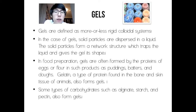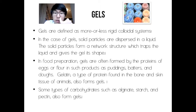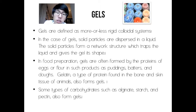Gels are defined as more or less rigid colloidal systems. In the case of gels, solid particles are dispersed in a liquid and the solid particles form a network structure which traps the liquid and gives the gel its shape. When preparing food, gels are often formed by the proteins of eggs or flour in products such as pudding, batter, and dough. Gelatin, the type of protein found in the bone and skin of animals, also forms gels. Some types of carbohydrates such as alginate, starch, and pectin also form gels.